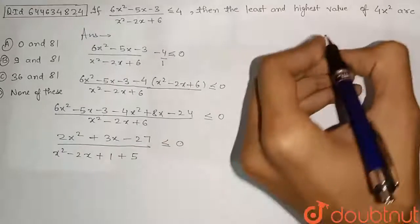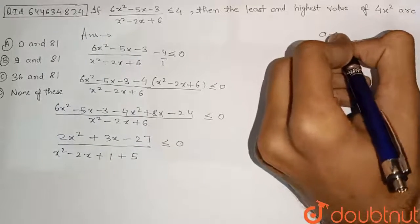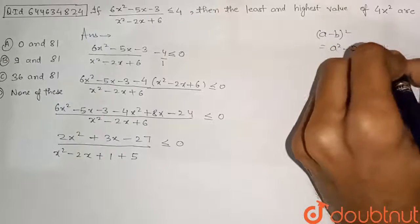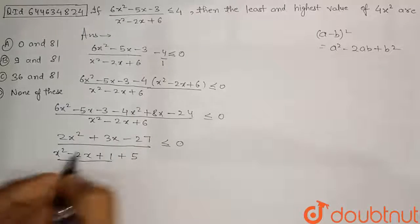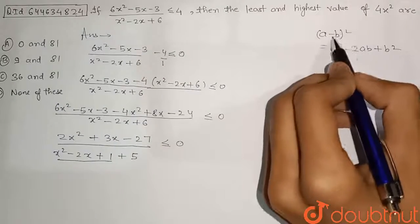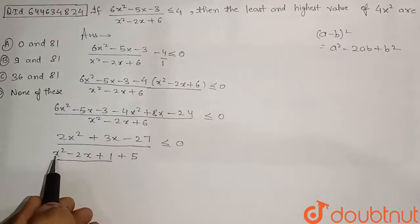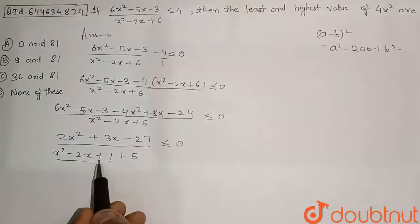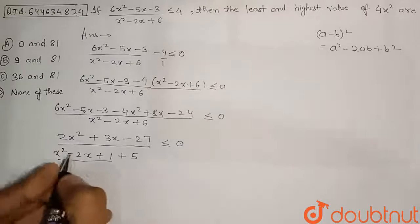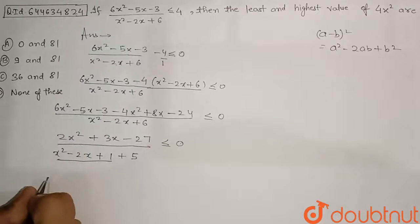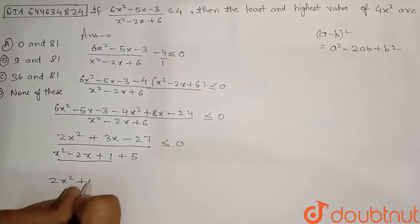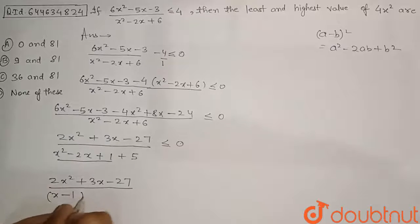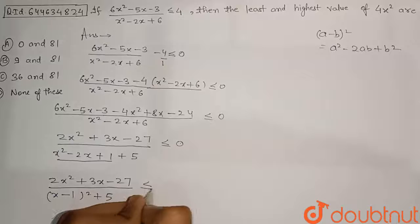Using the identity (a - b)² = a² - 2ab + b², the denominator x² - 2x + 1 + 5 can be written as (x - 1)² + 5. So the full expression becomes: (2x² + 3x - 27) / [(x - 1)² + 5] ≤ 0.